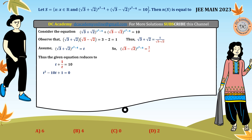Multiplying both sides by t gives the quadratic equation t² − 10t + 1 = 0. Middle term factorization is not simple here, so we use the quadratic formula: x = (−b ± √(b² − 4ac)) / 2a. Applying this, we obtain t = 5 ± 2√6. These are the solutions of the quadratic equation in terms of t.